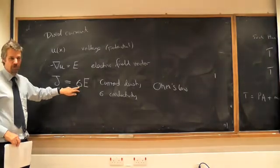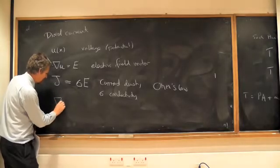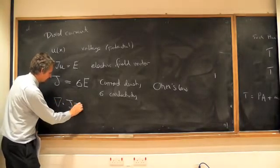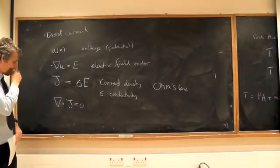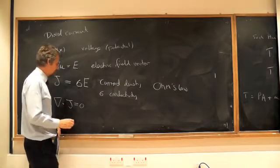Something is, and that's what we're looking for. So divergence of j equals zero is Kirchhoff's law.